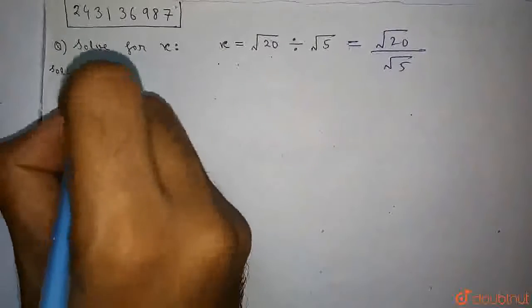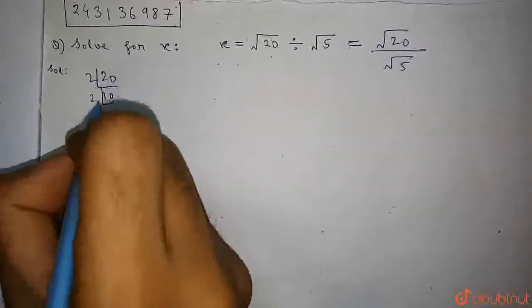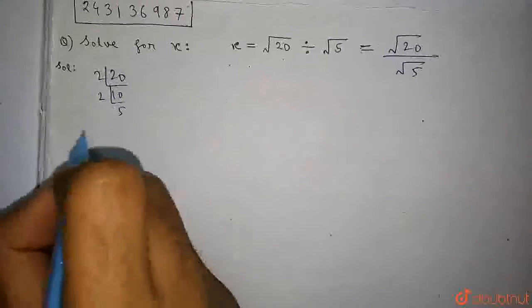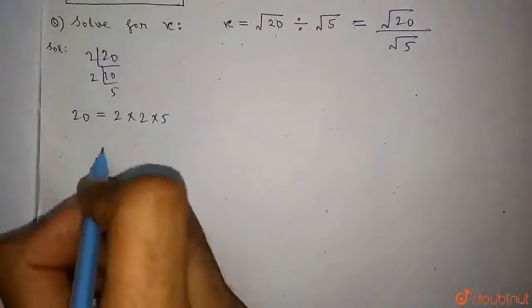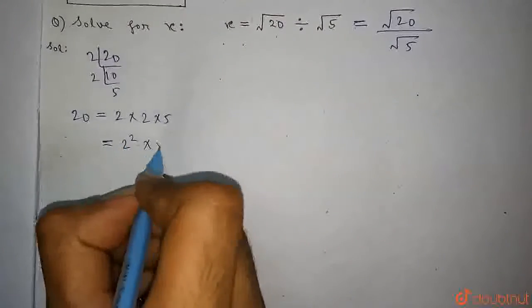So if we factorize 20, we will see it is 2×5. So 20 we can write it as 2 into 2 into 5, or we can say it is 2² into 5.